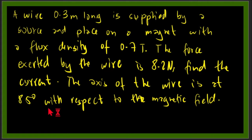We have a problem: a wire 0.3 meters long is supplied by a source and placed on a magnet with a flux density of 0.7 tesla. The force exerted by the wire is 8.2 newtons, so we need to find the current. The axis of the wire is at 85 degrees with respect to the magnetic field.